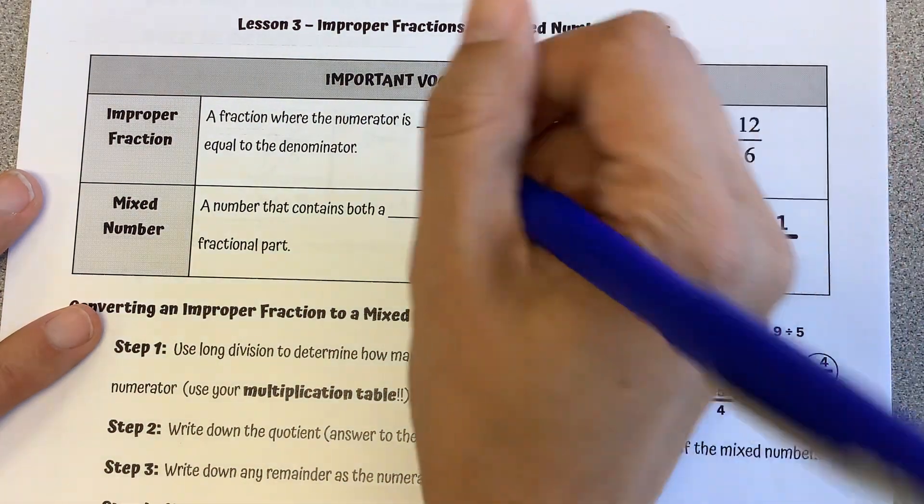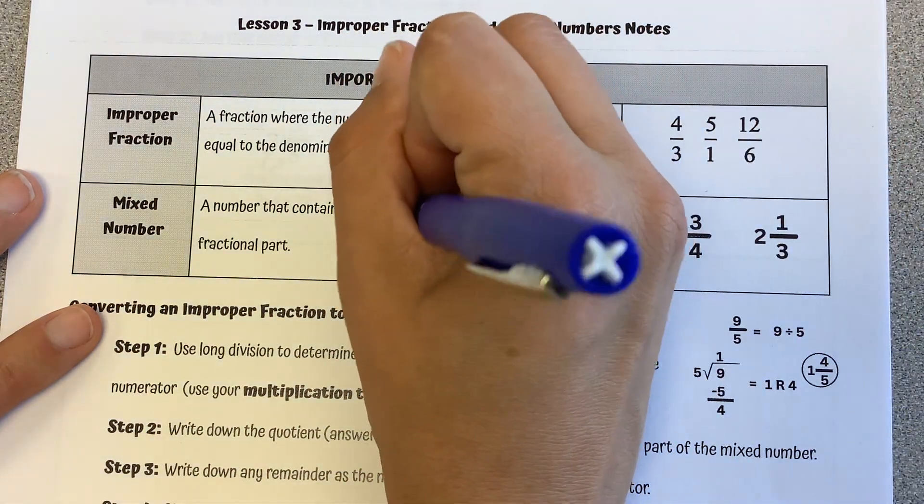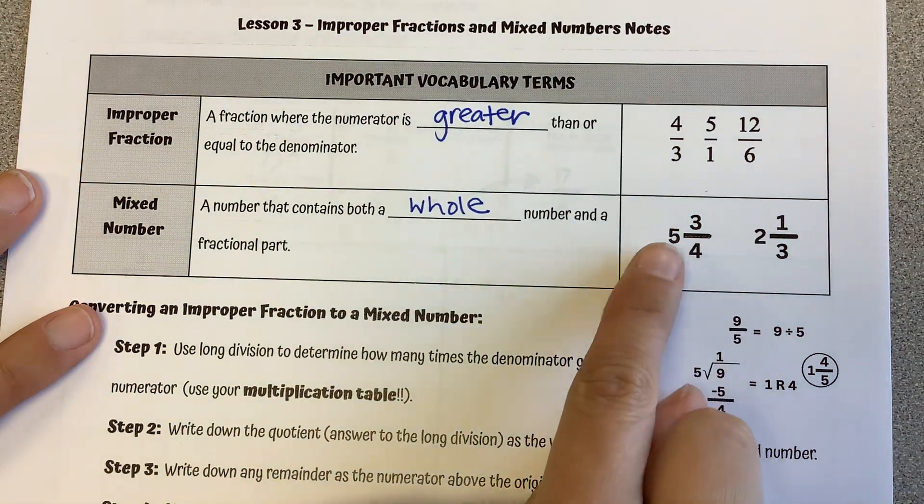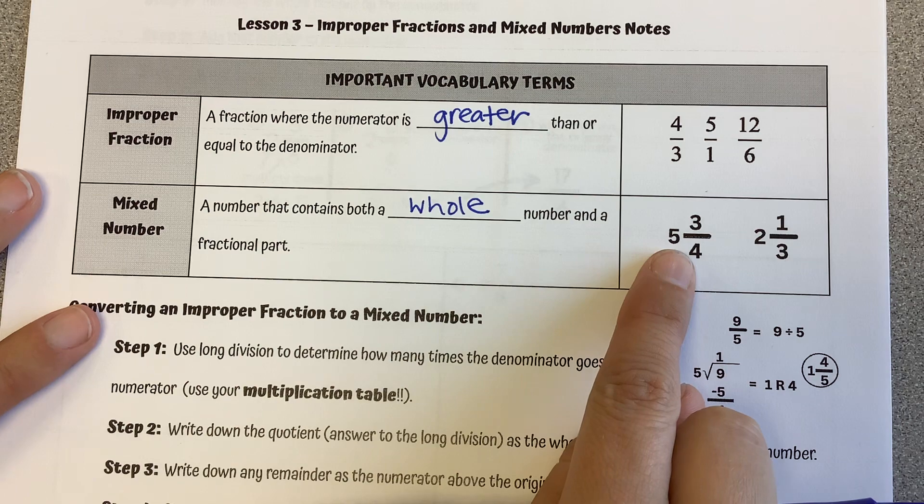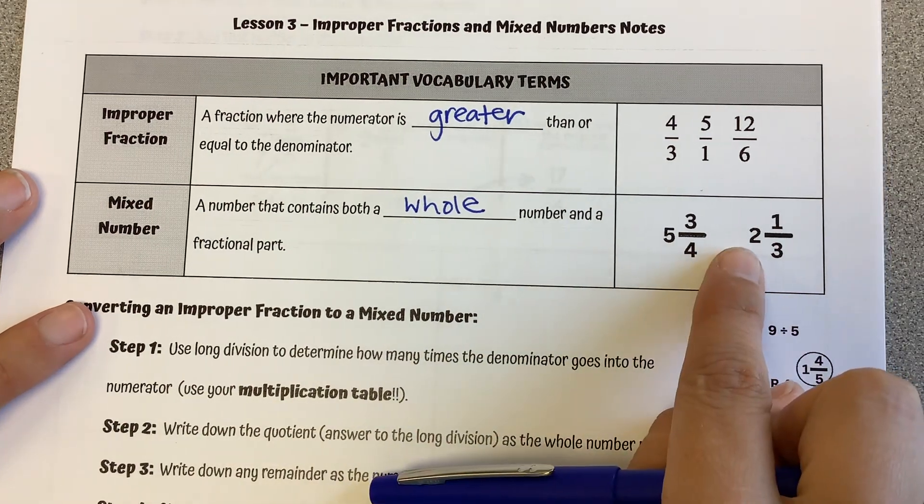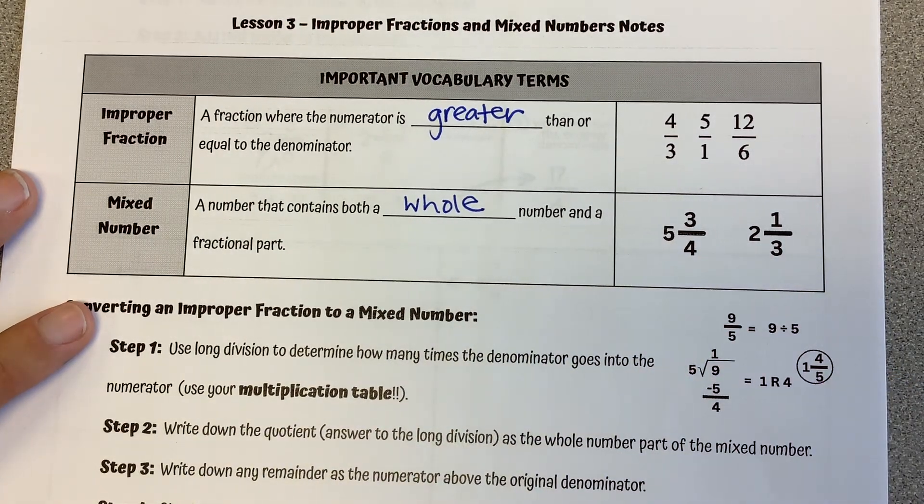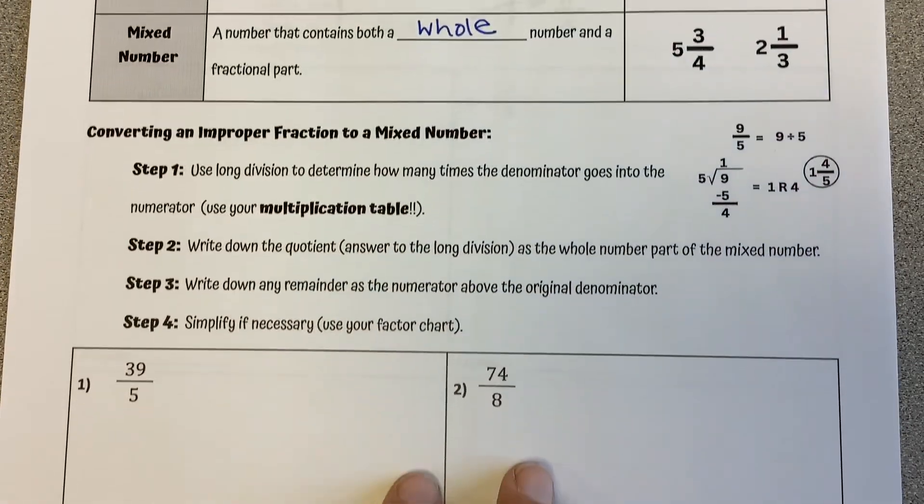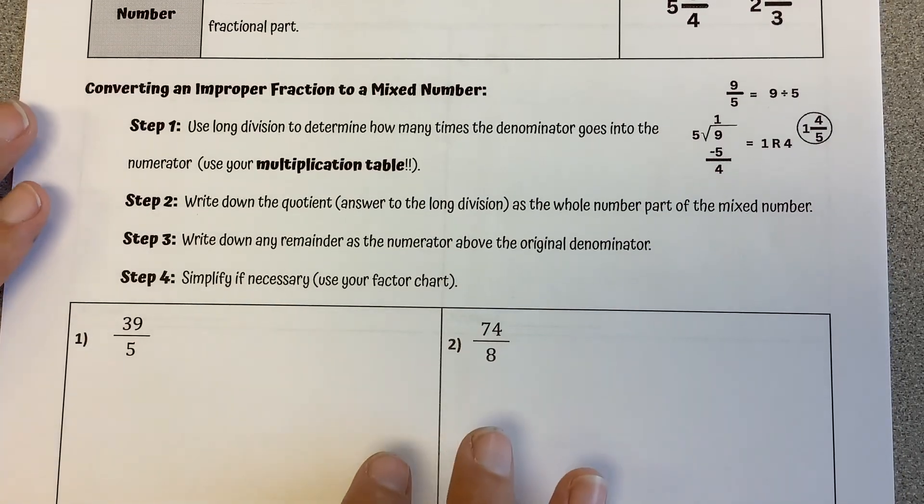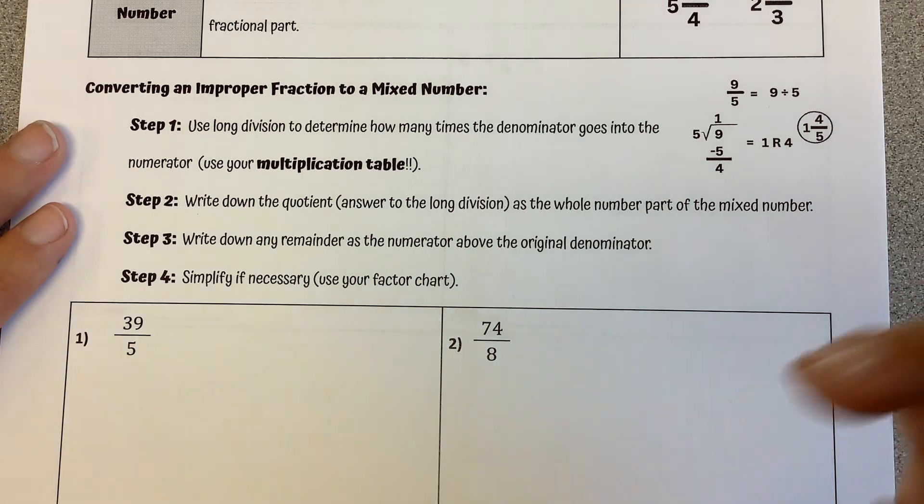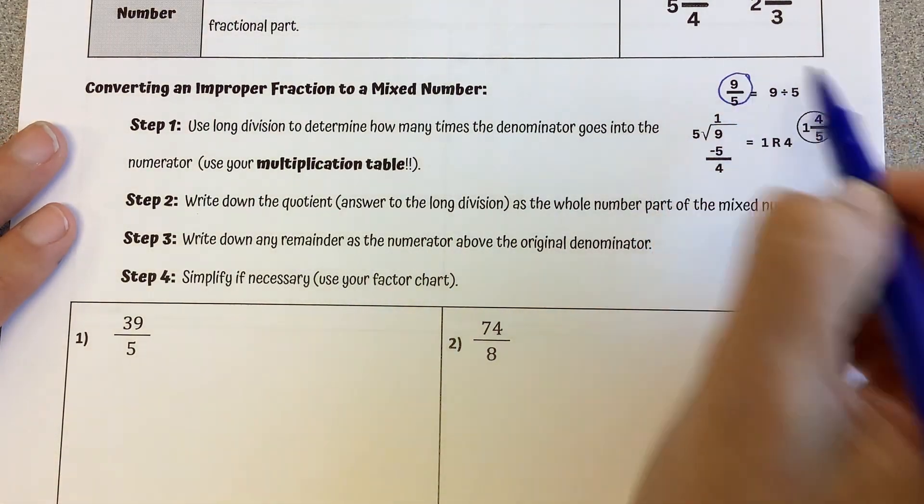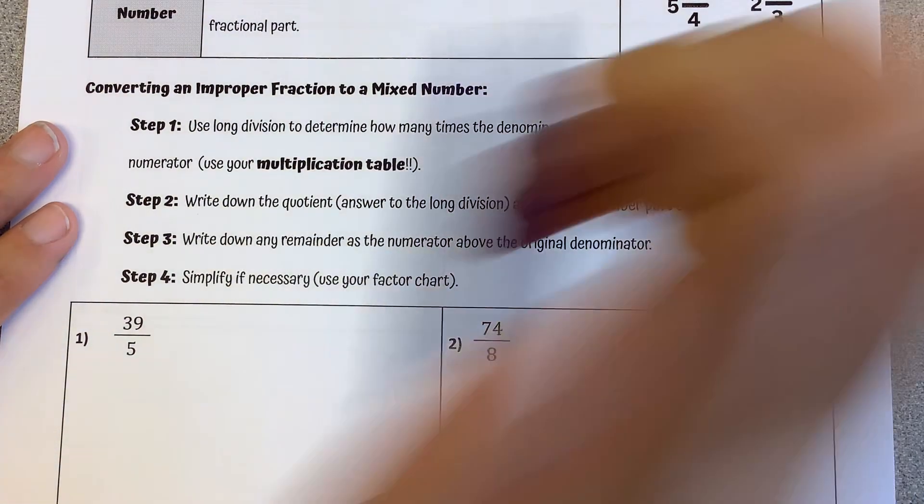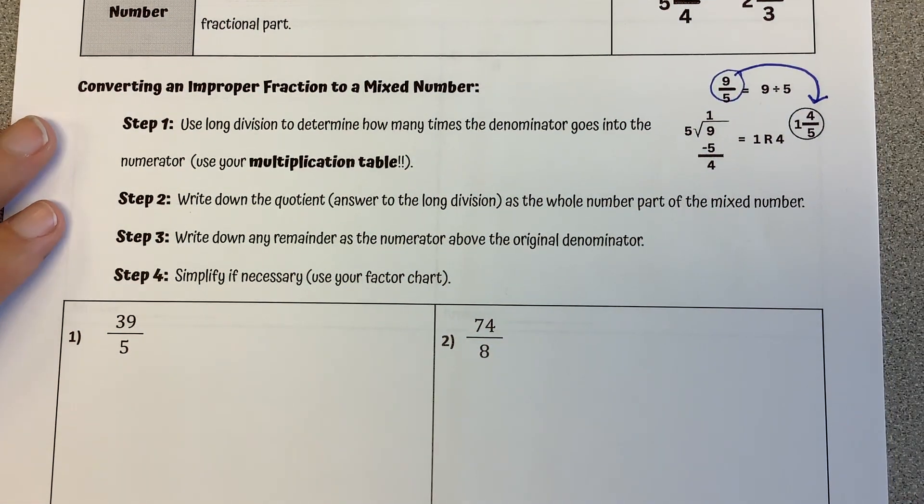Versus a mixed number is a number that contains both a whole number and a fractional part. So whole number of 5, fraction 3 fourths. Whole number of 2, fraction 1 third. So we are going to convert from between these two. So right here, we have an improper fraction, and we're eventually going to convert that and turn that into the equivalent mixed number.